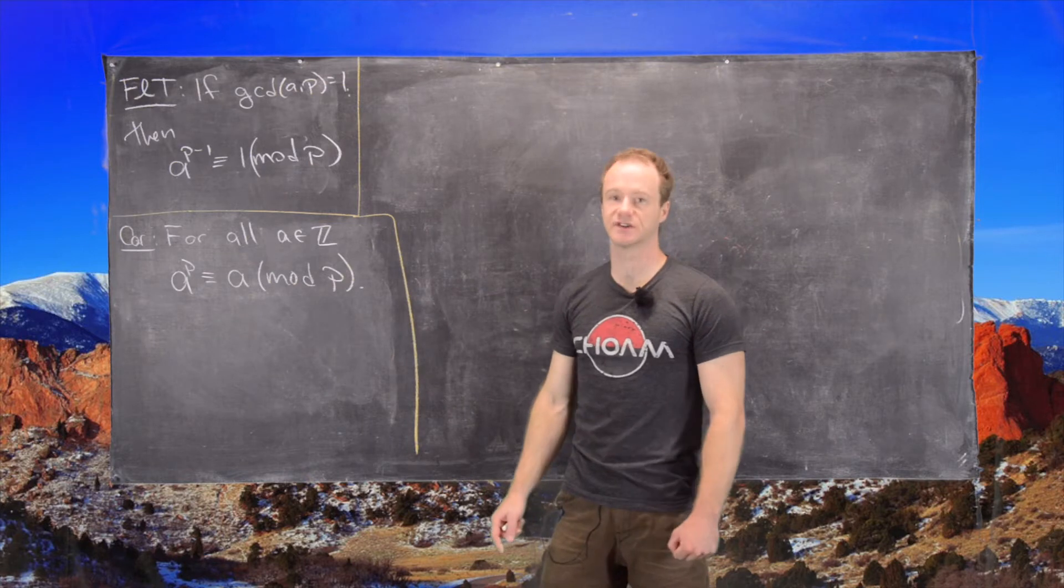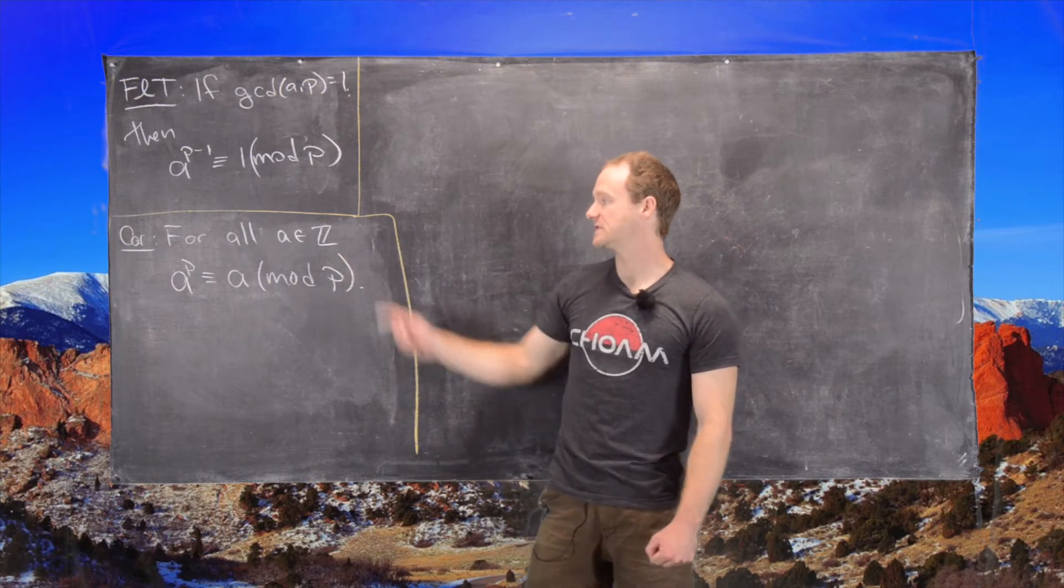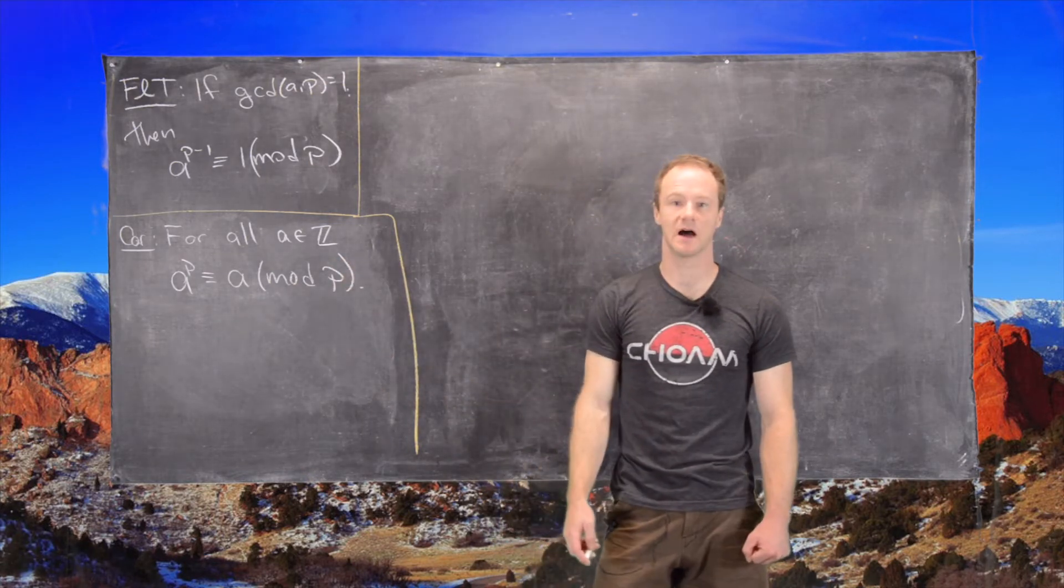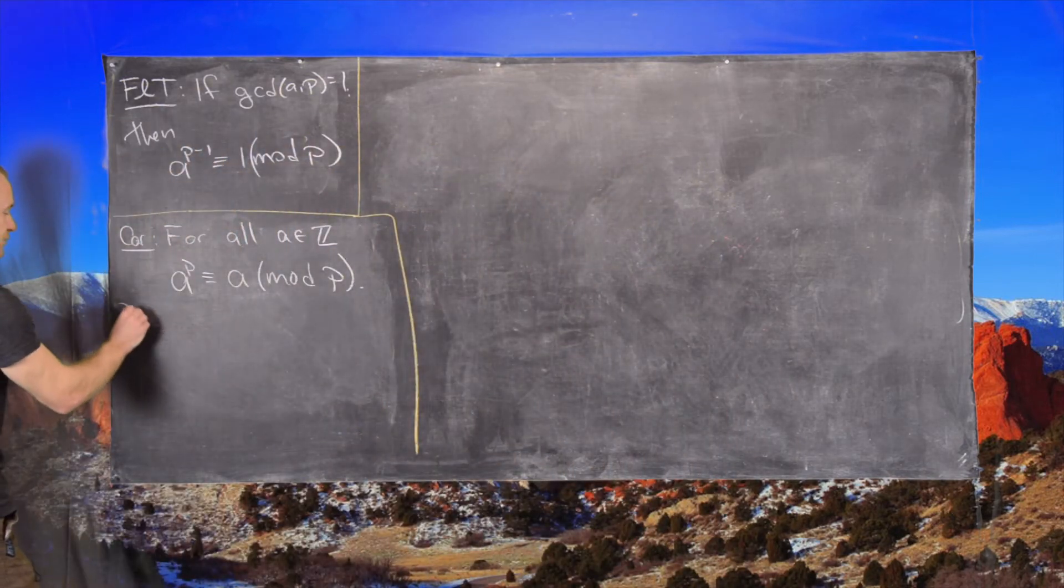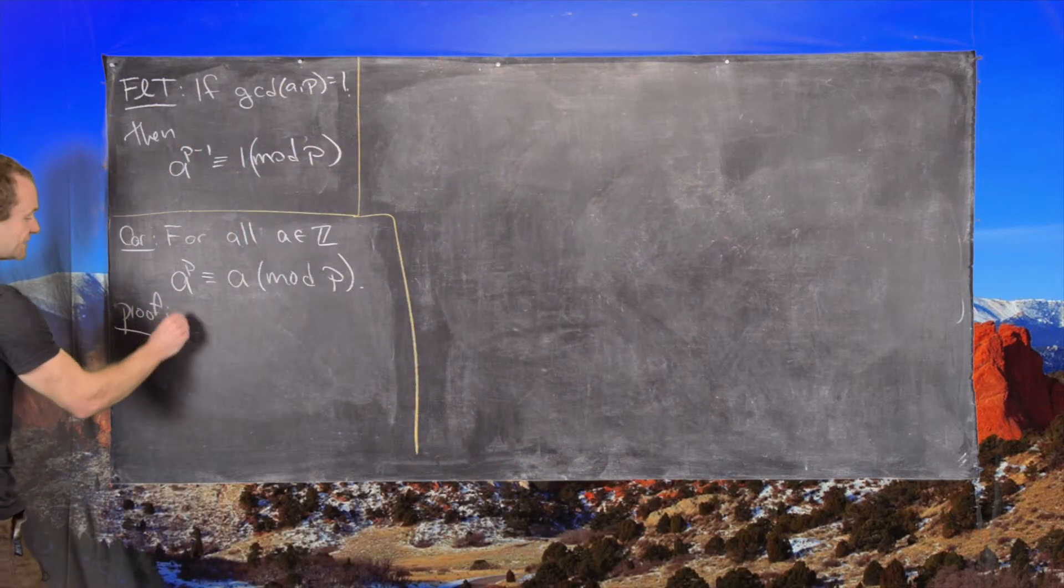The corollary says that for all integers A and Z, A to the P is congruent to A mod P. And so we can really split this proof into two cases.